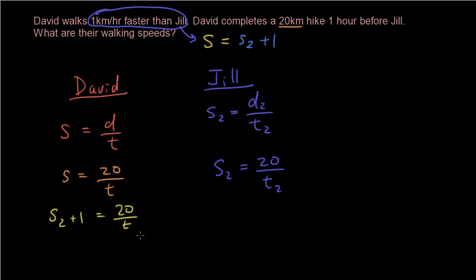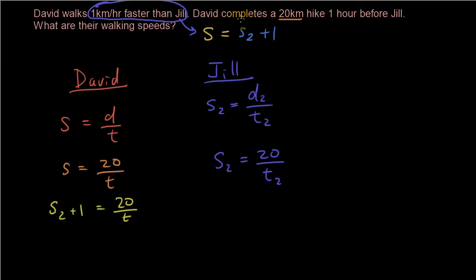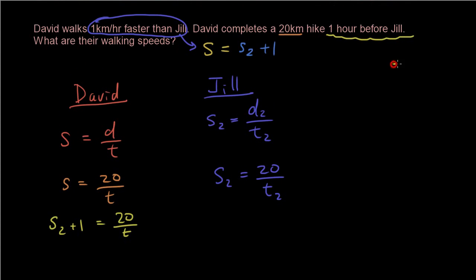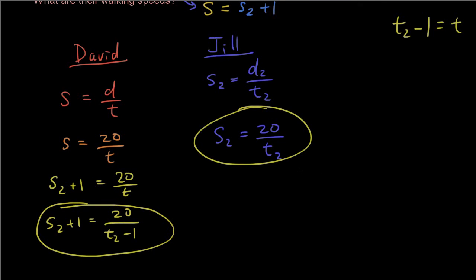Now, how many variables do we have? We have S2, we have T, and we have T2. So now we have two equations and three variables. Let's see if we can get rid of any more variables. David completes the hike one hour before Jill. So that means whatever Jill's time is, minus one will give you David's time. So now we can eliminate another variable. Instead of T, I'm going to write T2 minus one. So S2 plus one equals 20 over T2 minus one. Now I have two equations and two variables, which means I can solve them.